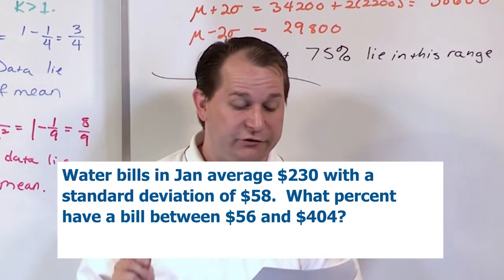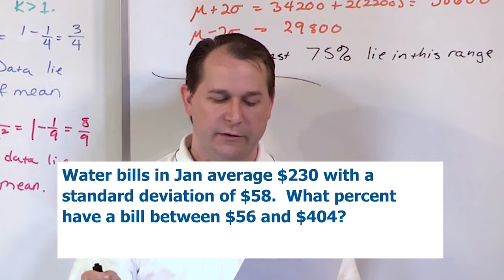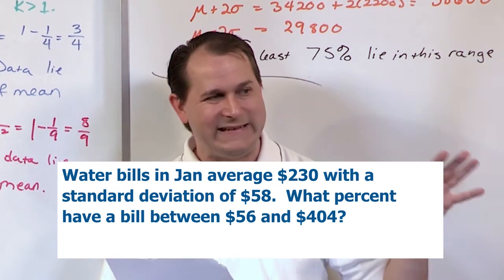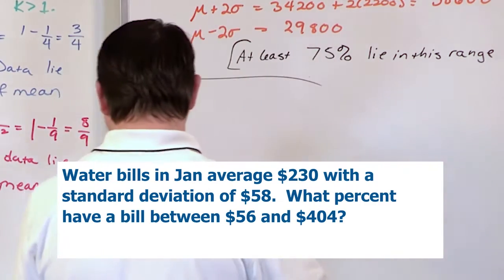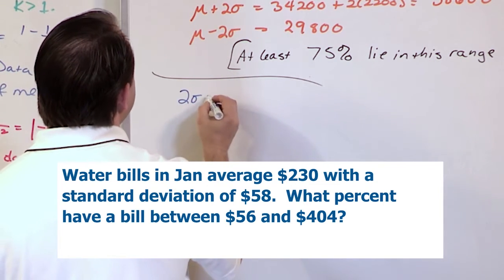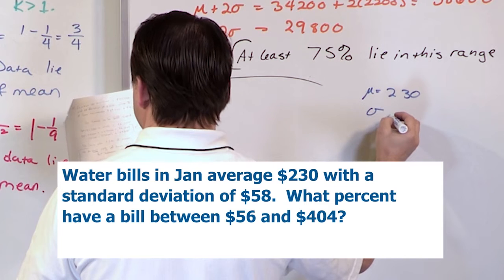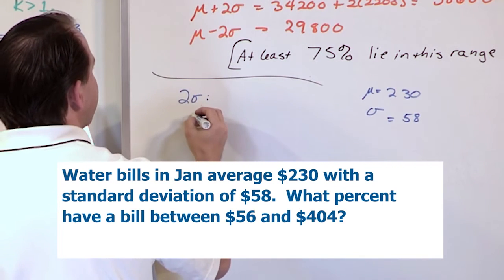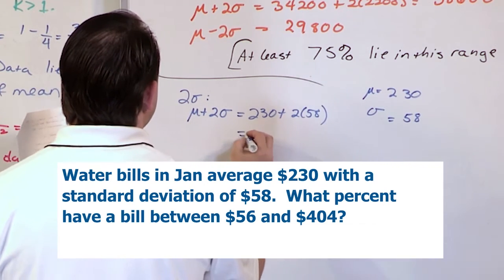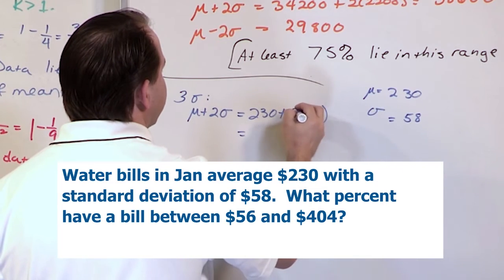Next problem: water bills in January averaged $230 with a standard deviation of $58. What percentage have a bill between $56 and $404? Notice this does not say it's bell-shaped, so we cannot use the regular empirical rule — we have to use Chebyshev's theorem. Looking at how many standard deviations this is: the mean is 230, the standard deviation is 58. I'm going to guess this is 3 sigma based on the way the numbers work out.